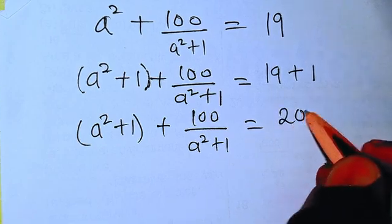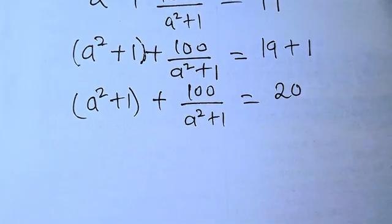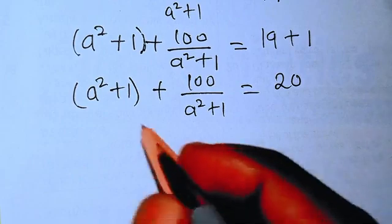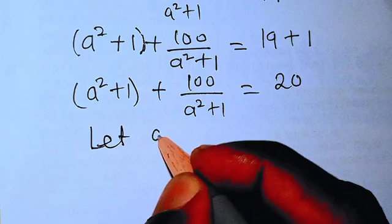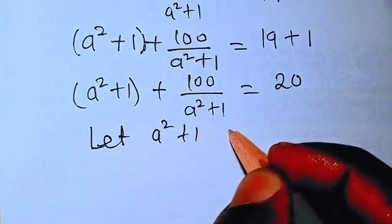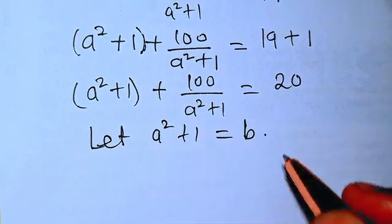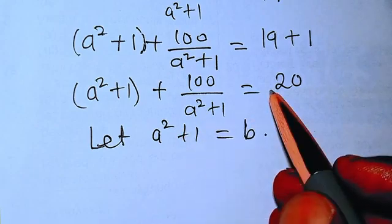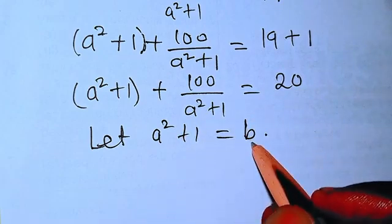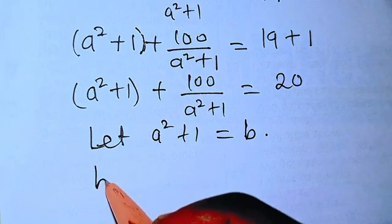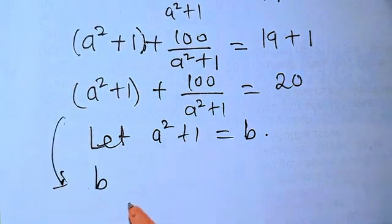So now from there we continue. So now we say let a squared plus 1 equals B. So therefore anywhere we see a squared plus 1 in this equation, we replace it by B. So this is going to be B. From here, it's going to be B.